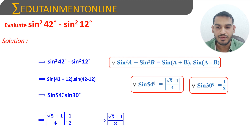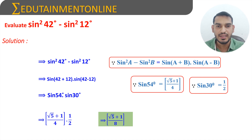Therefore the value of sin square 42 degrees minus sin square 12 degrees is equal to (root 5 plus 1) by 8.